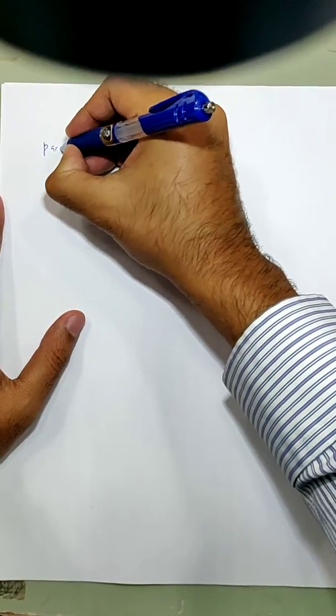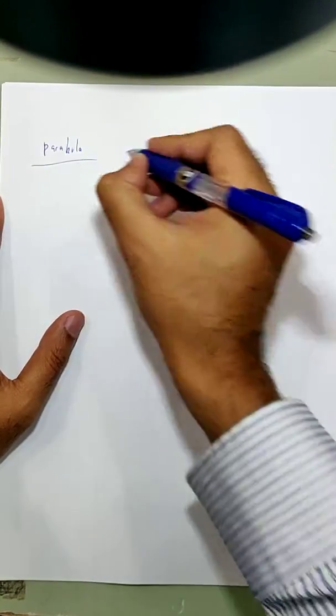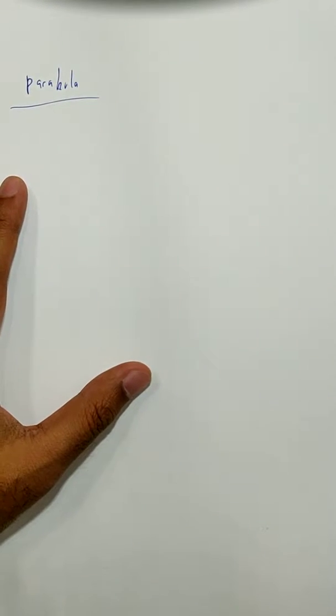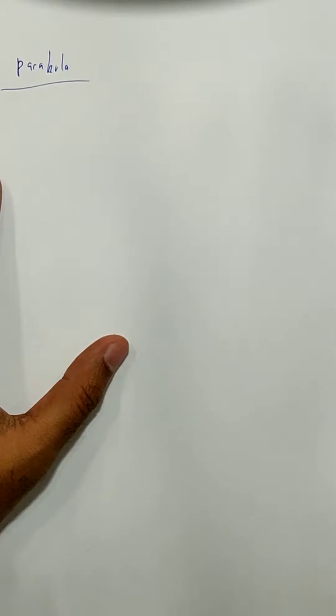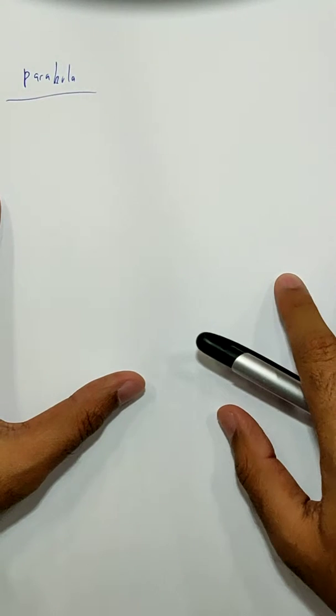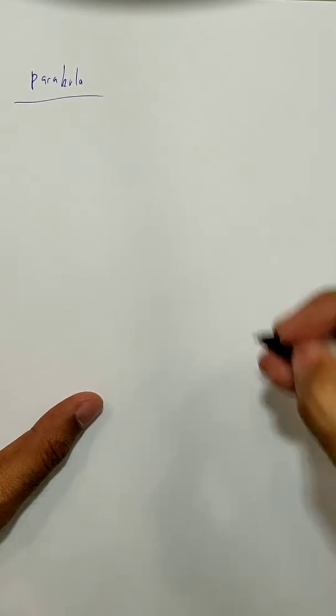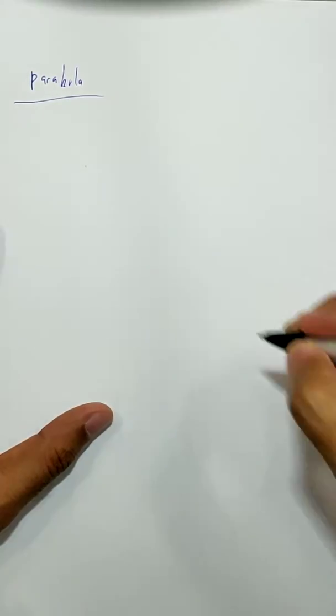Continuing on for our last topic of conics, which is the parabola. Okay, parabola, there are a little bit of recaps. There are two types of parabola. To be more exact, there are four.